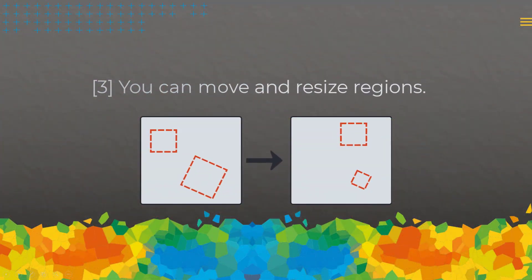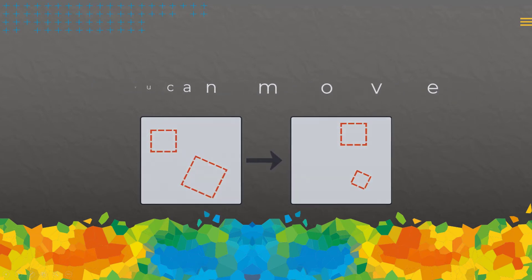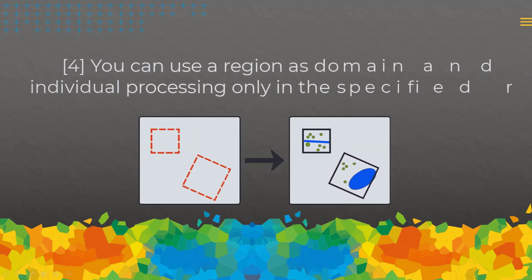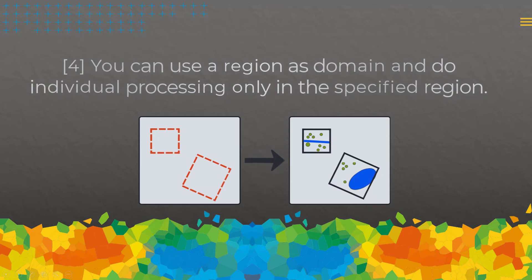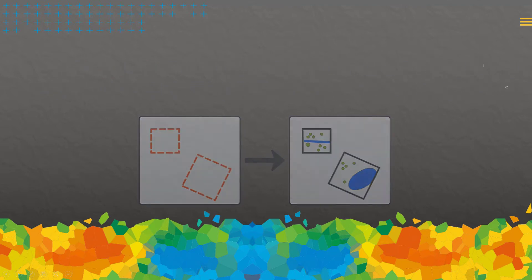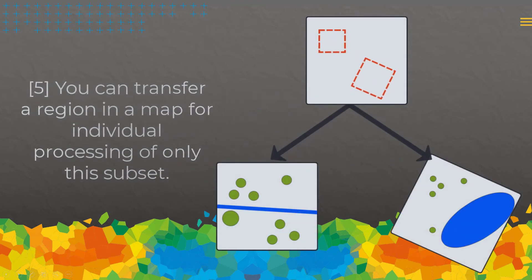You can also move and resize regions. You can use a region as a domain and do individual processing only in the specified region, limiting processing and avoiding the need to process the whole scene. You can also transfer a region into a map for individual processing of only that subset. If you don't know how maps work, please check out the material on maps and regions in maps.